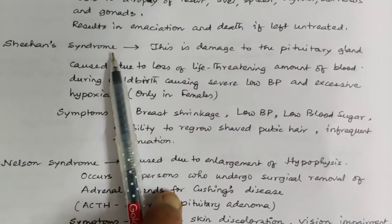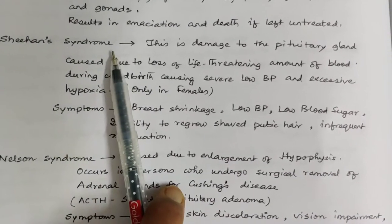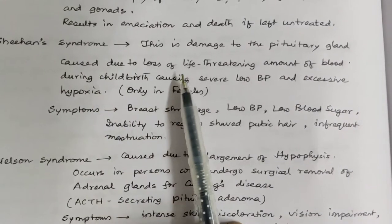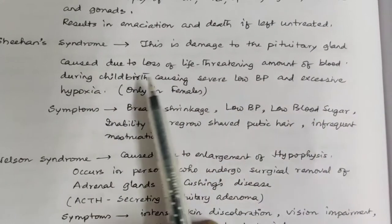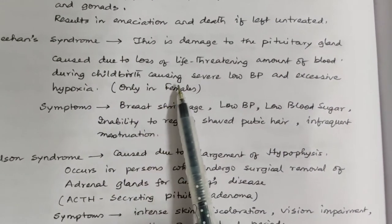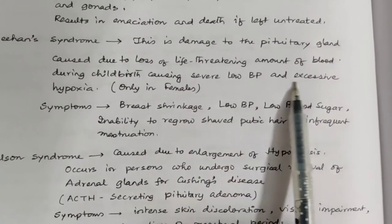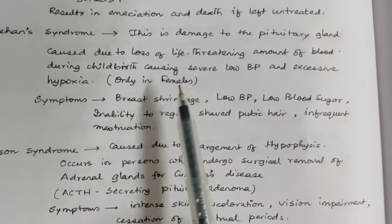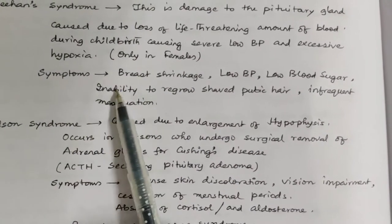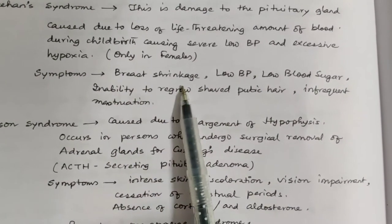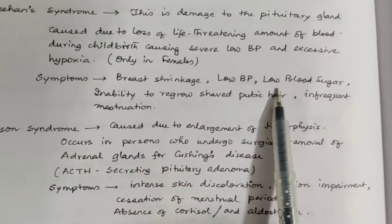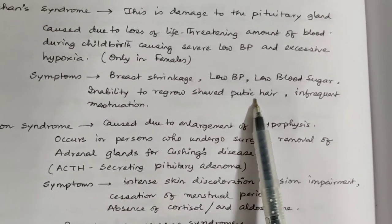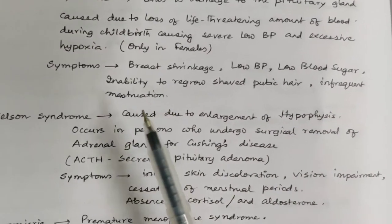Sheehan's syndrome is damage to the pituitary gland caused by a life-threatening loss of blood during childbirth, causing severe low blood pressure and excessive hypoxia — only in females. Symptoms are shrinkage of breasts, low BP, low blood sugar, inability to regrow shaved pubic hair, and infrequent menstruation.